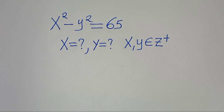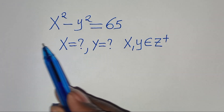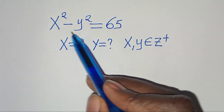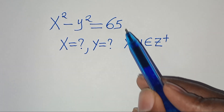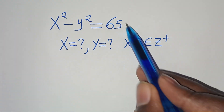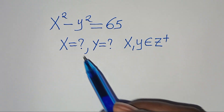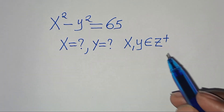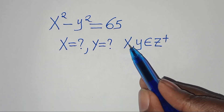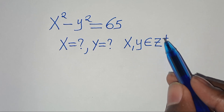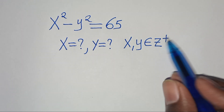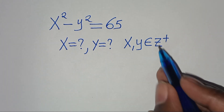Hello everyone, you are welcome to solve this nice algebra problem, which is x squared minus y squared equals 65. What is the value of x and what is the value of y, given that x and y are members of the positive integers?